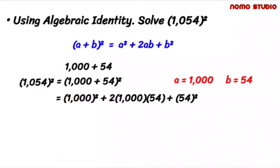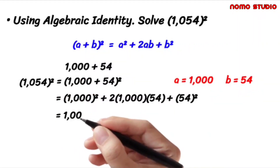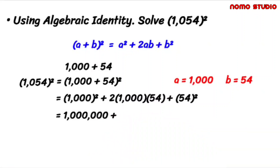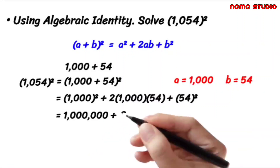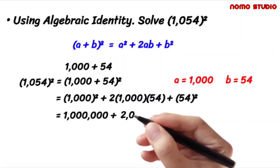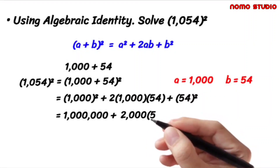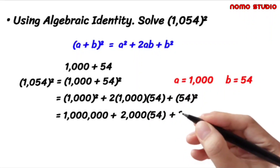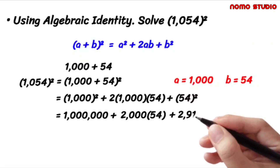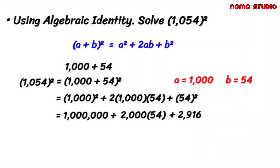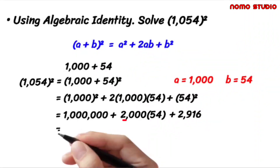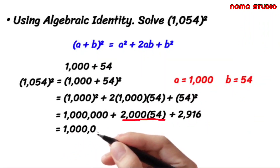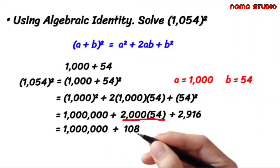1000 times 1000 is equal to 1 million. Then 2 times 1000 is 2000, times 54. And 54 squared is 2916. 2000 times 54 is equal to 108,000.